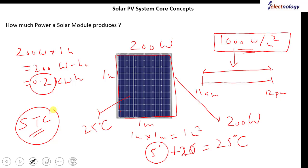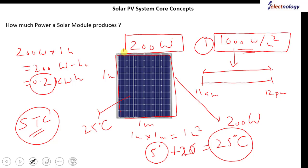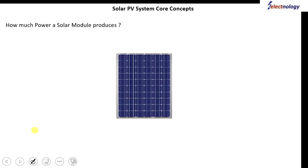So the STC has two conditions: first, sun energy should be 1000 watts per meter square, and second, the module temperature should be 25 degrees centigrade. Only when both conditions are met, if the module is specified as 200 watts by the manufacturer, will it produce 200 watts. If the temperature increases or the solar energy is different, the module shall produce different power.